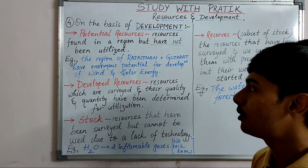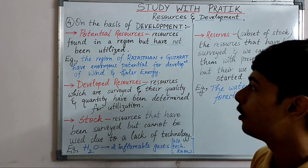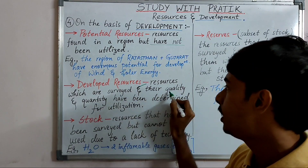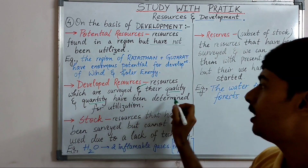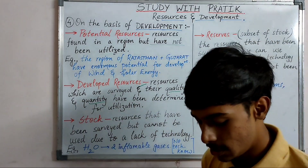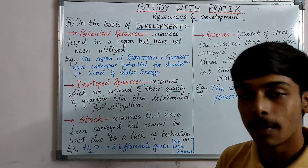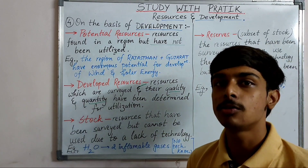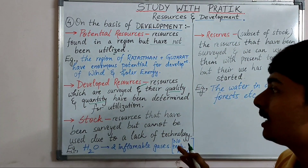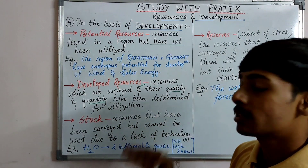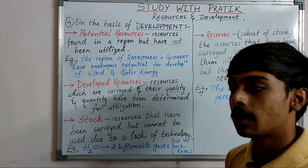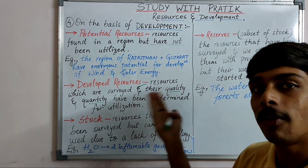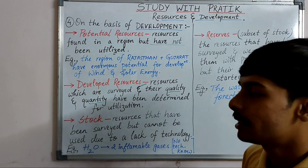Developed resources are resources which have been surveyed and their quality and quantity have been determined for utilization. We know the resources are there, their quantity and quality are known, and development work is underway — that is why they are called developed resources.